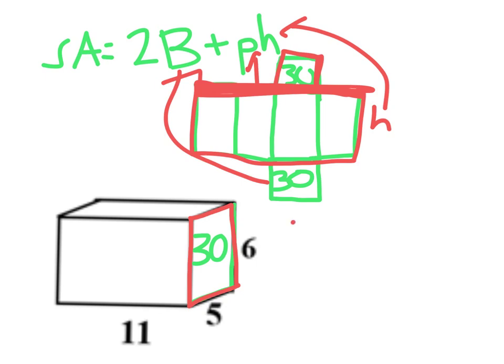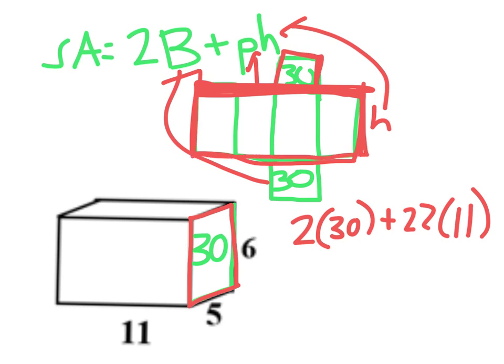So I'm going to fill that into my formula that I have two of the 30s, the areas of the base, plus the perimeter which I found to be 22 of that base, times the height, because that would be the height of the rectangle that is made in that surface net. So when I work that out, 2 times 30 is 60, 22 times 11 is 242. I have to add those together, and I get an answer of 302 units squared.